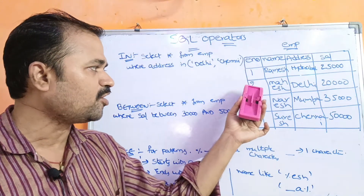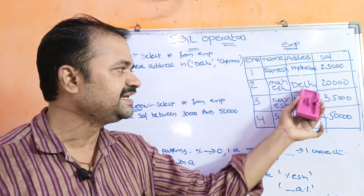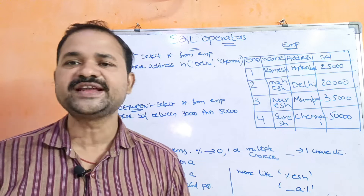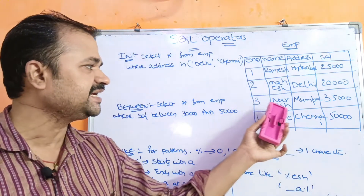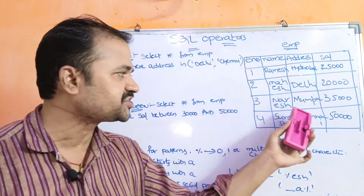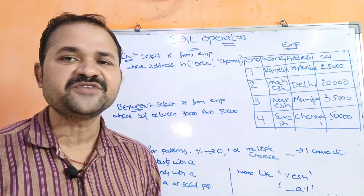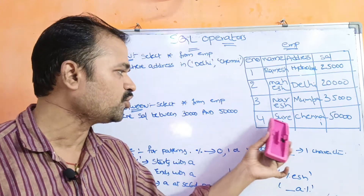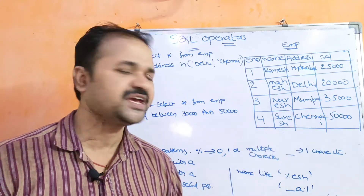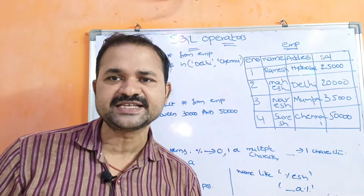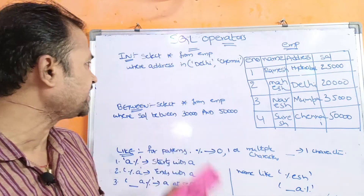Second record: 2, Mahesh, Delhi, $20,000 salary. Third record: 3, Naresh, Mumbai, $35,000 salary. Fourth record: 4, Suresh, Chennai, $50,000 salary.